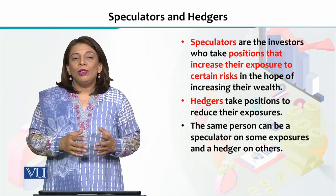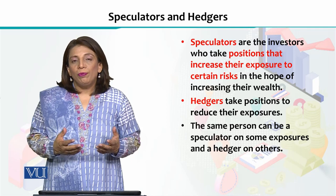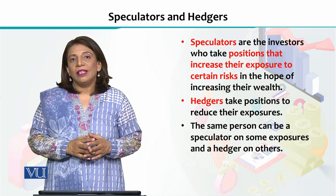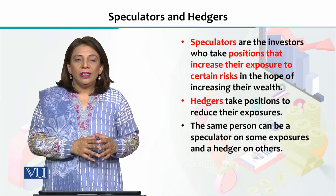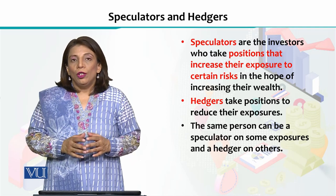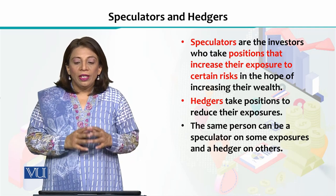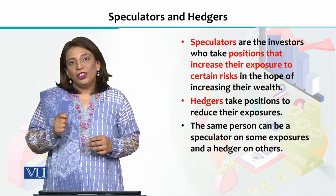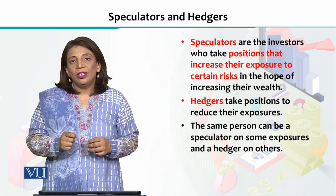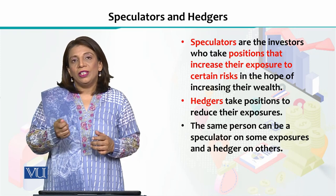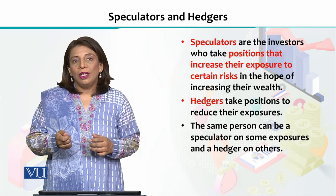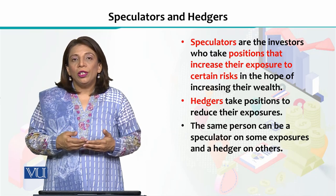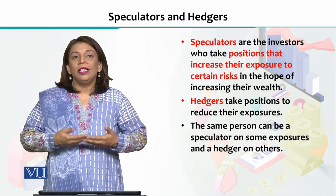There are two different types of people in financial markets: speculators and hedgers. Speculators are investors who take positions and buy and sell financial instruments in ways that will increase their risk exposure.